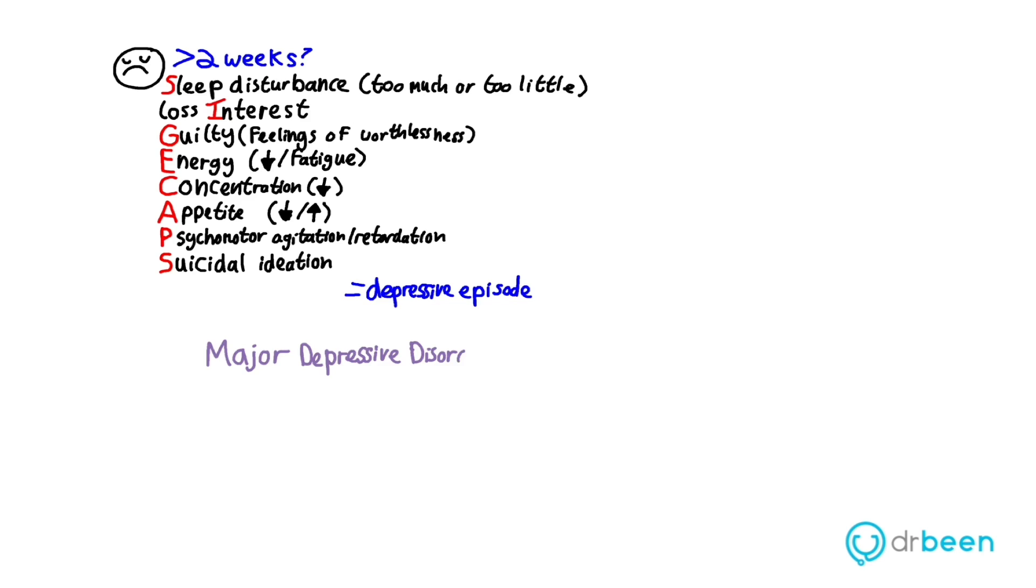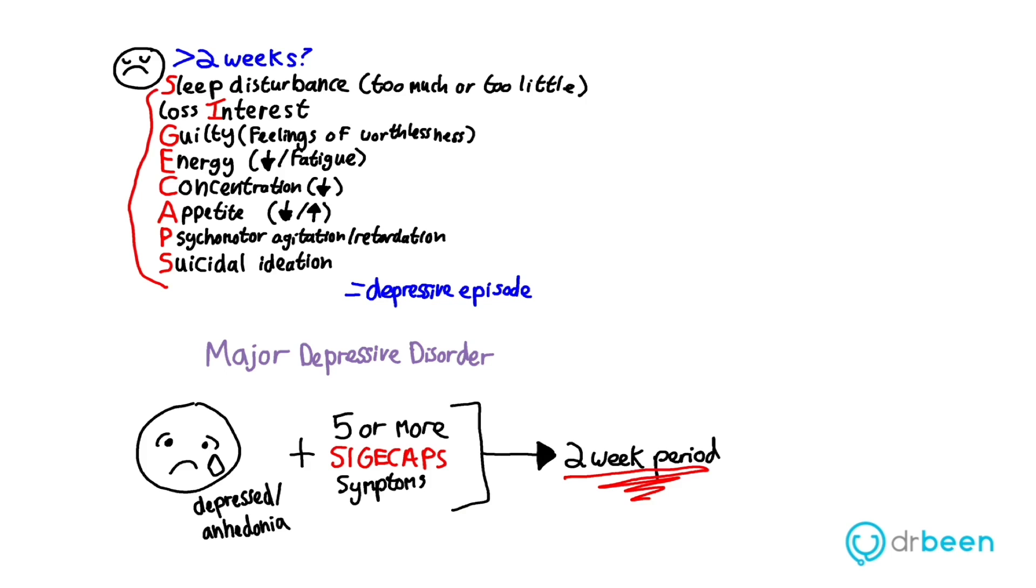Major depressive disorder is characterized by one or more of these depressive episodes. The diagnosis of major depressive disorder requires depressed mood or anhedonia, which is loss of interest and pleasure, and five or more signs or symptoms from the CIGI-CAPS mnemonic for a two-week period. As you can see, the CIGI-CAPS is a very good way to remember the symptoms of depression.